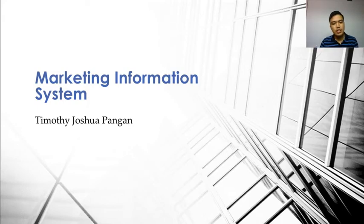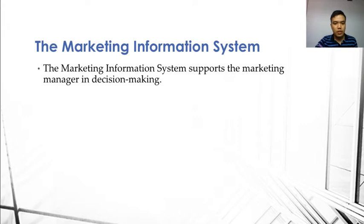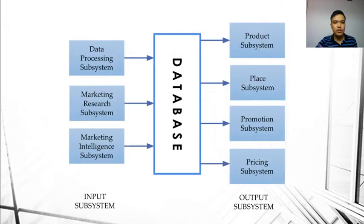Hi, hello everybody. This is Timothy Joshua C. Pan. I'll be discussing the marketing information system. The marketing information system supports the marketing manager in decision making, since marketing is directed towards the promotion and sale of some product through a strategic network of distribution channels. A marketing information system is expected to deliver information regarding product, place, promotion, and pricing — these are the four P's in marketing. A good mix of these four P's can settle a company to better performance.